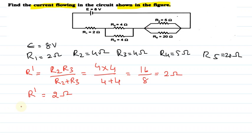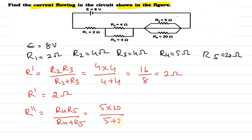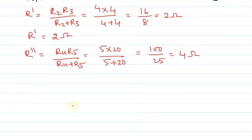Now let us find out the effective resistance between R4 and R5. R double prime is equals to R4 × R5 upon R4 plus R5, this is equals to 5 into 20 upon 5 plus 20, this is equals to 100 upon 25, that is equals to 4 ohms. So R double prime is equals to 4 ohms.